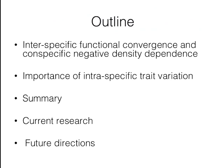That big question has been split into several projects. Today I'm going to talk first about the importance of interspecific variation in traits and the importance of con-specific negative density dependence. Then I'll present results related with a project evaluating interspecific trait variation as related with species abundance distribution patterns. After that, I'll summarize my main results, briefly talk about one current project, and finish by going through some future directions.